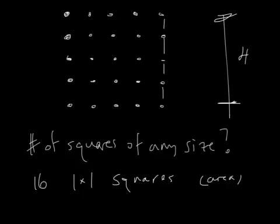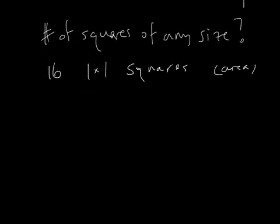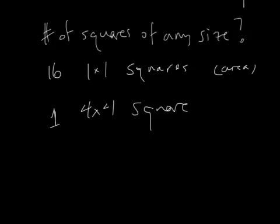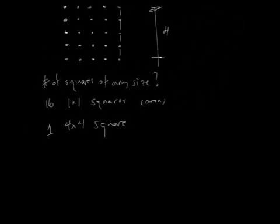Now, what we're going to do — I can count another one. There is one 4 by 4 square. So the question is, what do we have to count? What's the difficulty? What's left between 1 by 1 and 4 by 4? We have 2 by 2s and 3 by 3s.